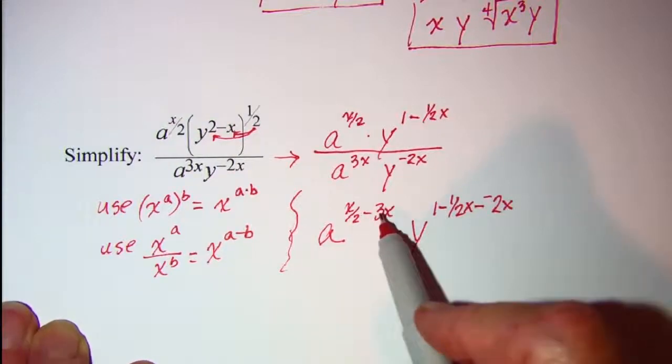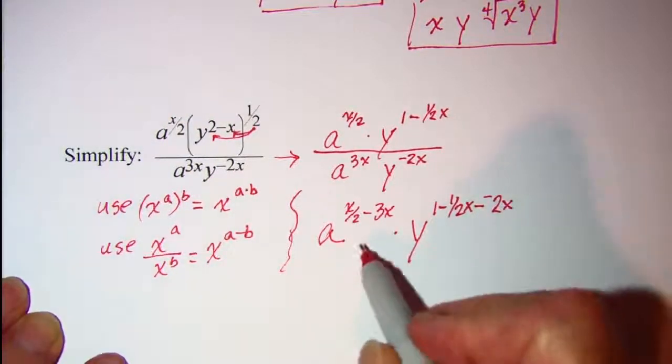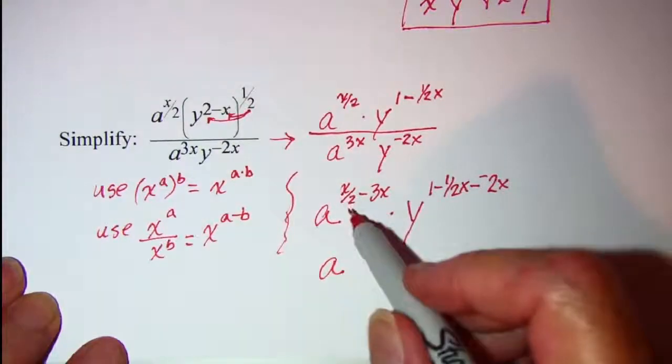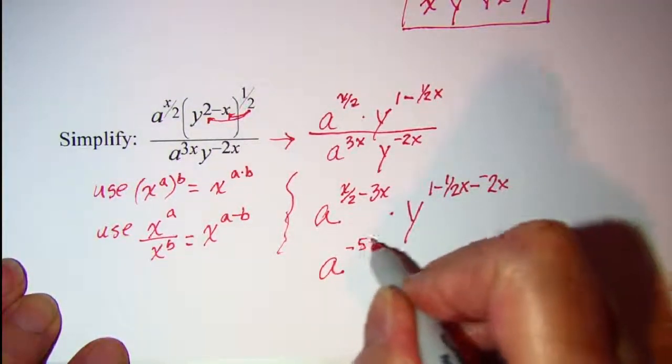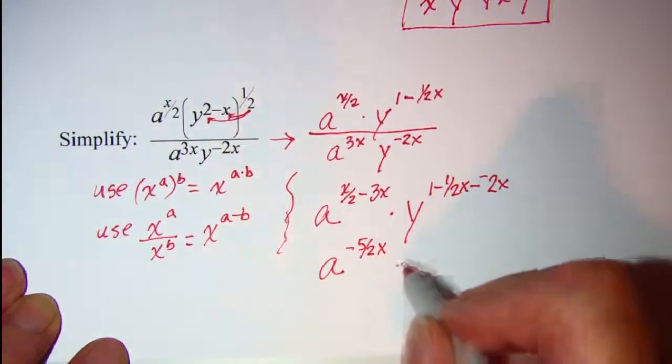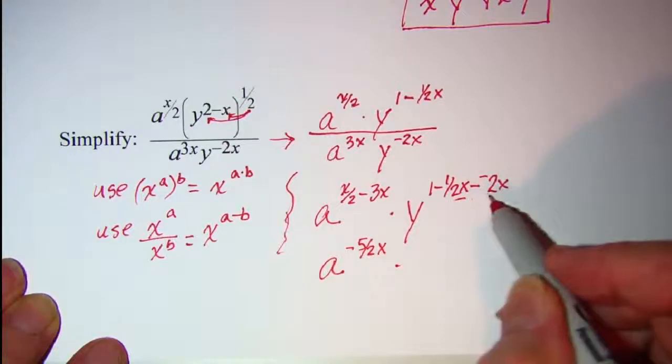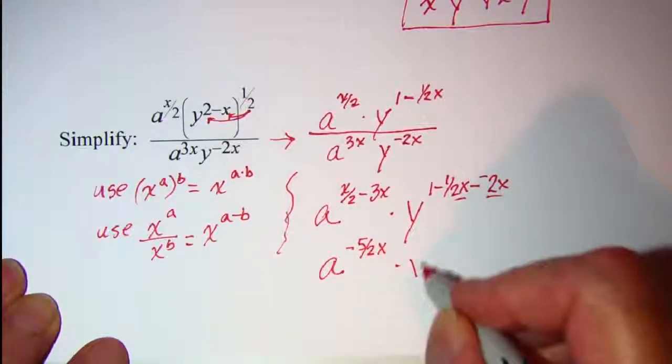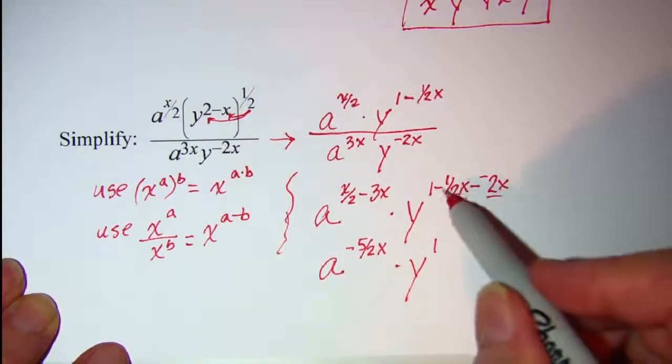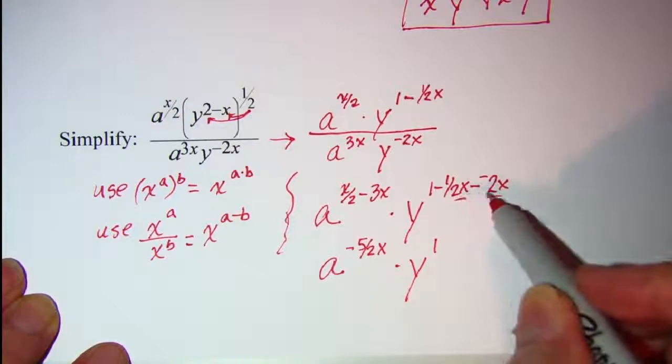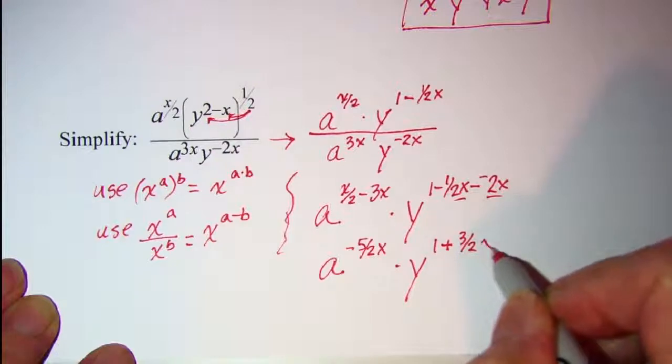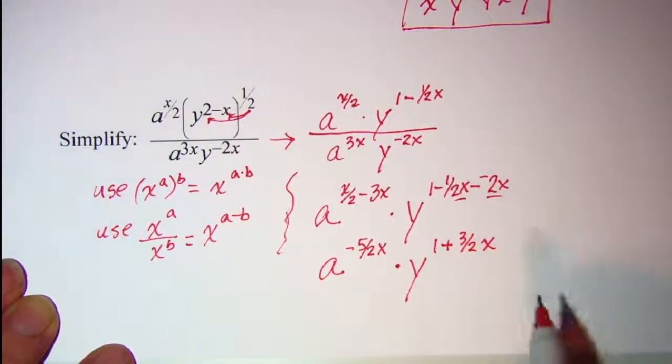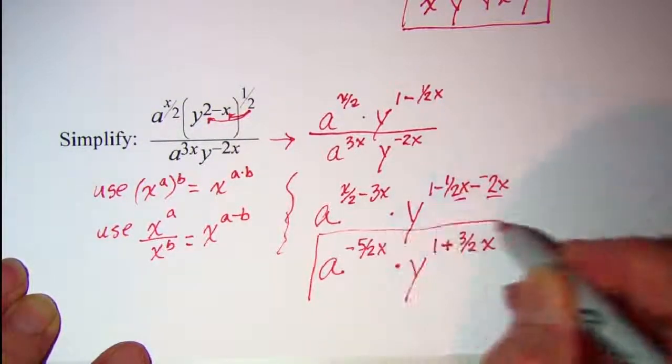Now if I have one half x, that's what this is, one half x, subtract 3x. This can be written as a to the 1 half and negative 6 halves will be a negative 5 halves x. And then on this one I have like terms here and here. The one I'll have to just copy. So I have a negative 1 half and a positive 2 is a positive 3 halves. This is multiplication.